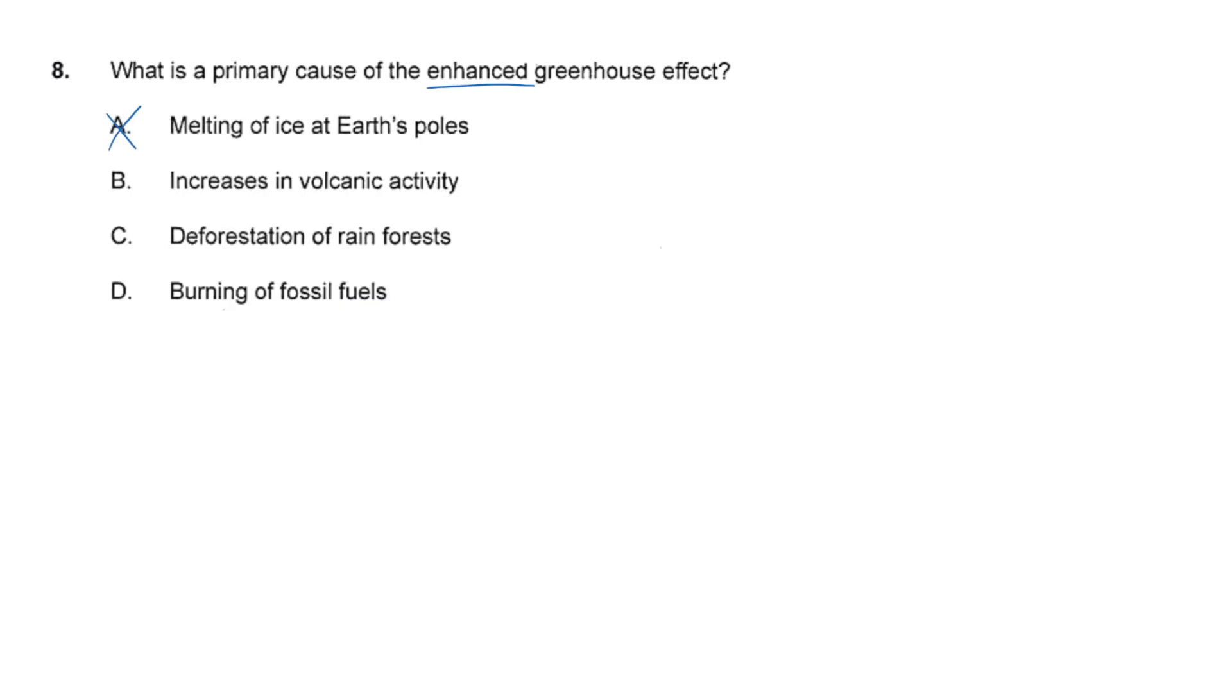And then B. Increases in volcanic activity. Alright. So volcanoes do emit CO2, right? Carbon dioxide. But this is going to be very small contributions and mostly temporary, right? So they're not going to be the primary cause. There are much bigger contributors.